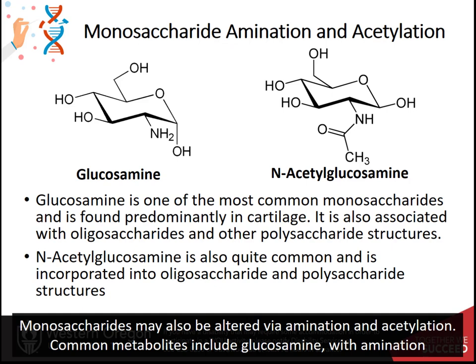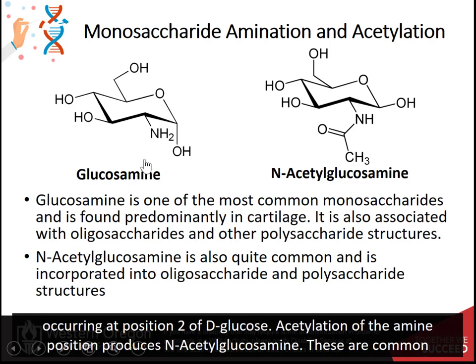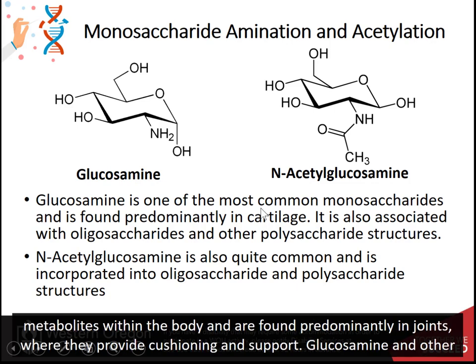Monosaccharides may also be altered via amination and acetylation. Common metabolites include glucosamine, with amination occurring at position 2 of D-glucose. Acetylation of the amine produces N-acetylglucosamine. These are common metabolites within the body and are found predominantly in joints, where they provide cushioning and support.